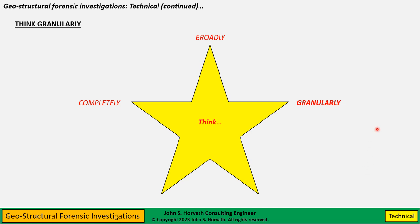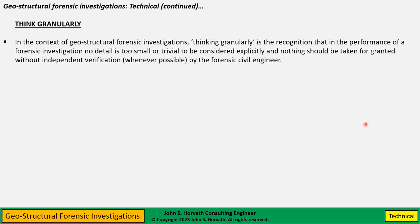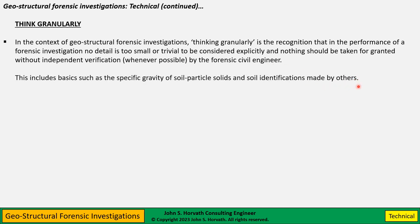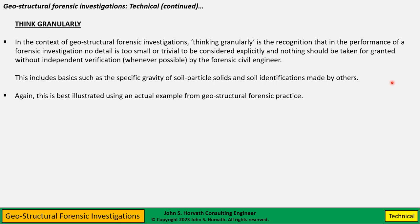The third of five themes, and the last of a technical nature, is to think granularly. In the context of geostructural forensic investigations, thinking granularly is the recognition that no detail is too small or trivial to be considered explicitly, and absolutely nothing should ever be taken for granted without independent verification to the extent practical or possible by you, the forensic civil engineer — including things we take for granted like specific gravity of soil particles or soil identifications made by others.